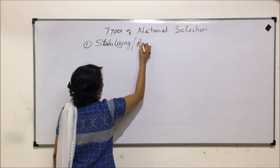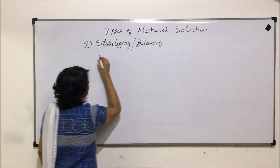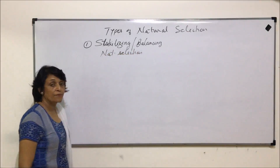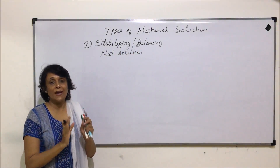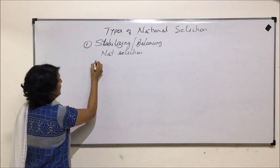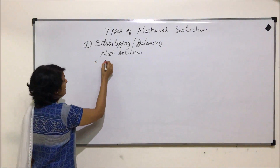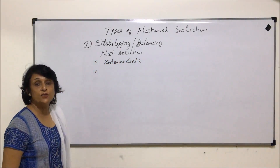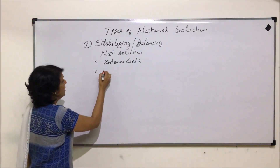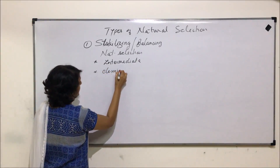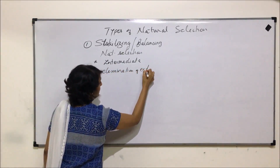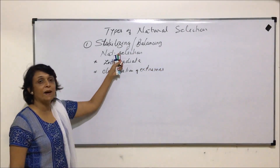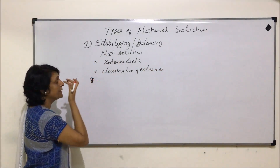Stabilizing, or balancing, natural selection means that nature selects in order to balance the population. Nature selects the intermediate and eliminates the extreme conditions — elimination of extremes — and this is how a stable kind of population is selected.